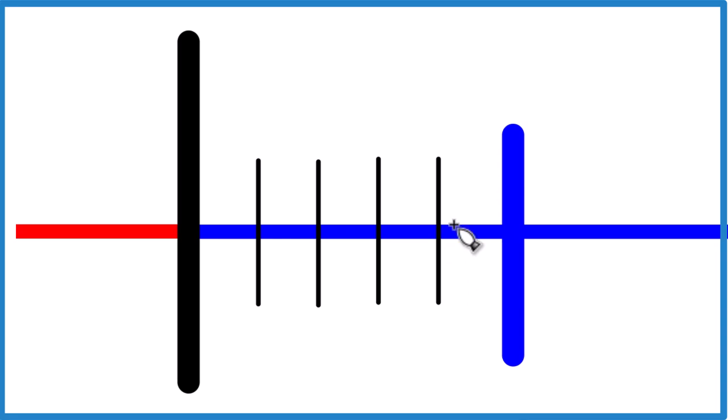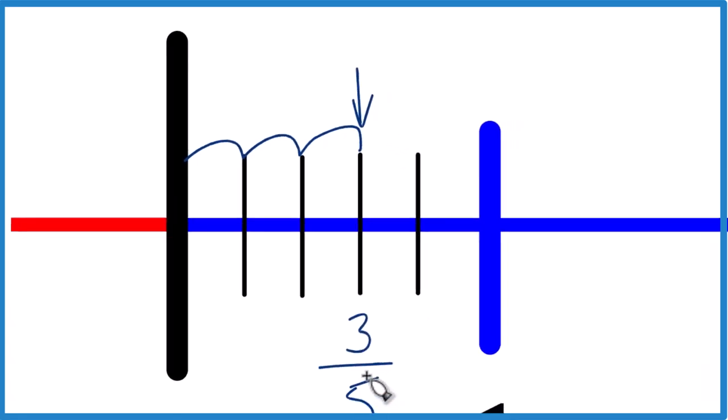So we want 3 fifths. So all we do is we go 1, 2, 3, and right here, that's 3 fifths on our number line.